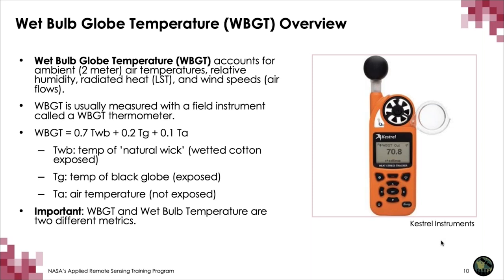It is important to note that wet bulb globe temperature and wet bulb temperature — both used widely in academia and by policymakers — are two different metrics that require different parameterizations. They should not be confused, because 30 degrees C of wet bulb globe temperature is much different than 30 degrees C of wet bulb temperature.